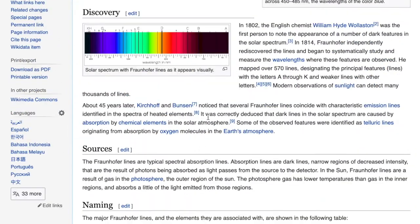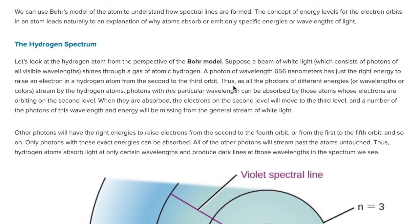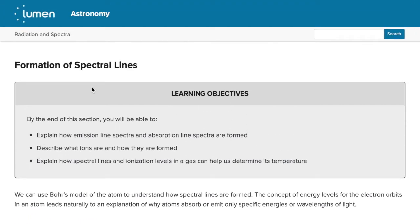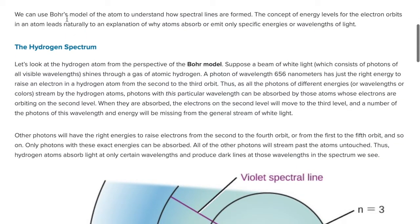And it's supposed to show you here. Oh, here. Let me show you how that works. The formation of spectral lines. By the end of this section, you'll be able to explain how emission line spectra and absorption line spectra are formed. We can use Bohr's model of an atom to understand how spectral lines are formed. The concept of energy levels of the electron orbits in atoms leads naturally to an explanation of why atoms absorb or emit only specific energies or wavelengths of light.